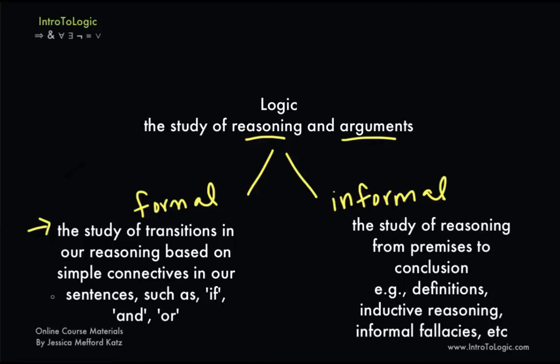So we're going to be coming up with forms of studying words like if, and, and or. And we're going to have a formal system which allows us to use the study of these connectives to understand our reasoning and what good reasoning looks like. In contrast, informal logic is the study of reasoning from premises to a conclusion. One way to think of informal logic is just as a system of critical thinking which doesn't use any symbolic logic.